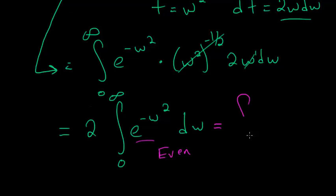Instead of having this two in front, the integral will be from minus infinity to infinity of e to the minus w squared dw.